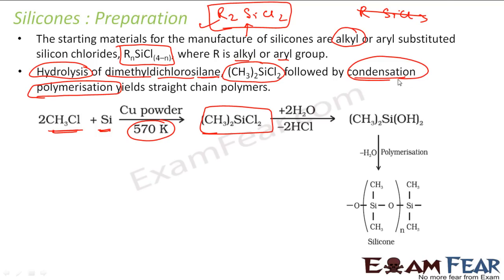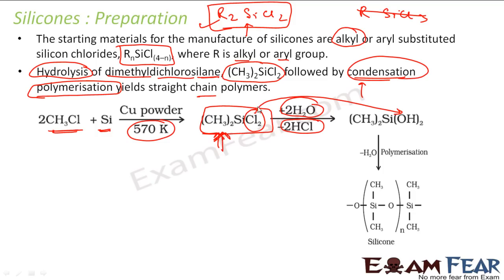We'll learn more about this in the organic chemistry chapter. Just note that we first get the aryl or alkyl silicon chloride from CH3Cl reacting with silicon and copper powder catalyst at 570 Kelvin. That gives us dimethyldichlorosilane. Then hydrolysis removes the chlorine and replaces it with OH groups, followed by condensation polymerization to give the silicone polymer.